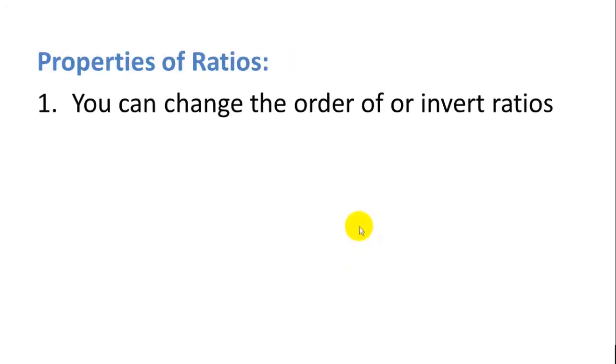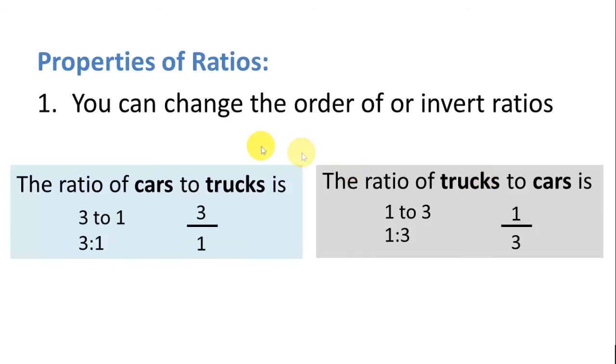A couple of properties on ratios. You can change the order of or invert ratios, because they're not actually fractions. So, for example, the ratio of cars to trucks is 3 to 1. The ratio of trucks to cars is 1 to 3. Now, in this case, the 1 still is indicating trucks, or 1 colon 3. The 1 still indicates trucks, and the 3 still indicates cars. So it's okay to invert the fraction as long as we know that the labels are inverted as well.